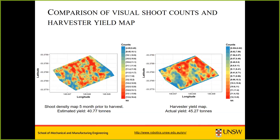Comparing the shoot density map with the harvester yield map on the right-hand side, the general pattern of shoot density reflected the pattern of the final volume of fruit throughout the block. This tool provides growers the ability to differentiate between low, medium, and high shoot densities to improve management decisions.